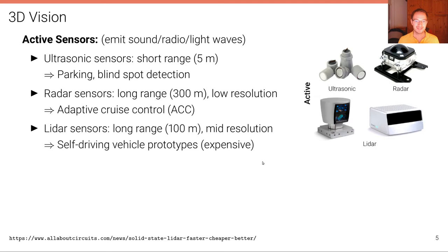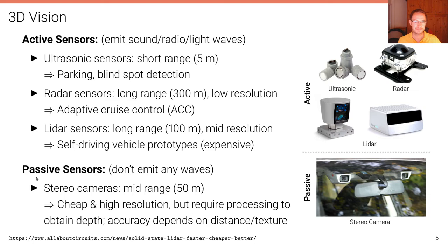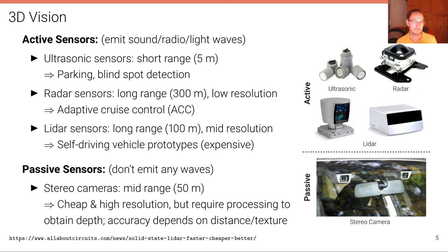In contrast to active sensors, cameras are passive sensors that don't emit any waves. The advantage of stereo cameras is that they are very cheap and have very high resolution — up to 4K or beyond. The disadvantage is that they require additional processing to obtain depth. Unlike active sensors, they don't directly perceive depth but require a stereo matching algorithm to convert RGB images into depth maps. Accuracy also depends quadratically on distance, and on the texturedness of the scene.